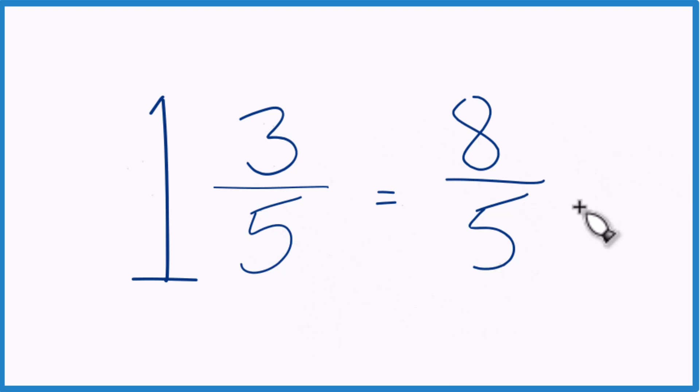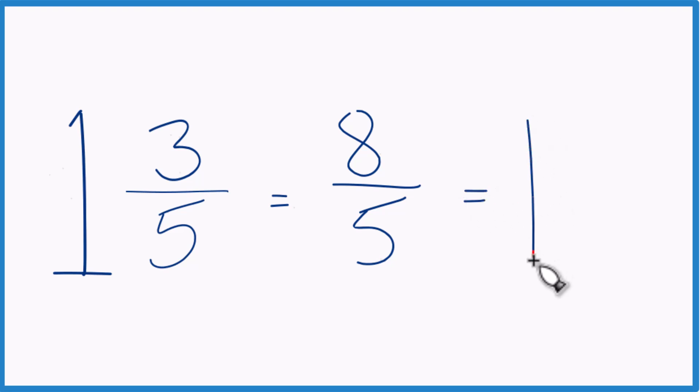We can check our work too because 5 goes into 8 one time with 3 left over. Bring the 5 across and we get 1 and 3 fifths.